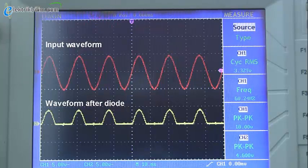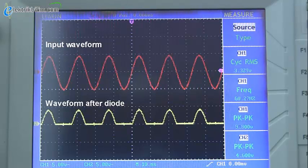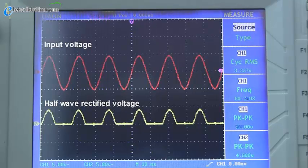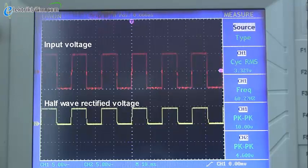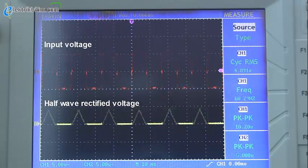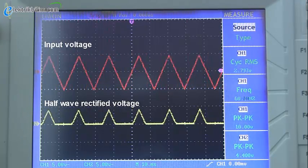So if you feed an AC voltage or current through a diode, the negative voltage will just get blocked off, and you'll be left with only the positive half of the waveform. This process is called half-wave rectification, and it doesn't have to be with just a sine wave. It'll also work with square waves, triangle waves, or any other waveform that dips into the negatives.